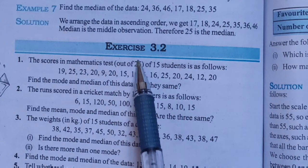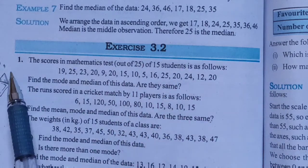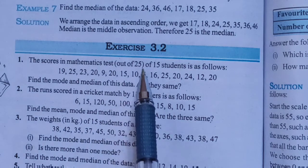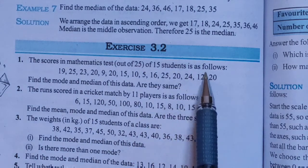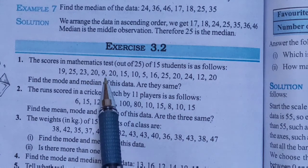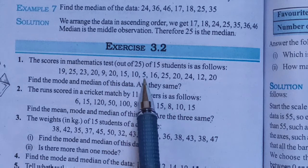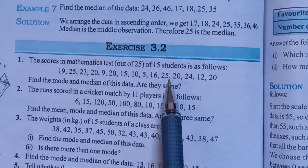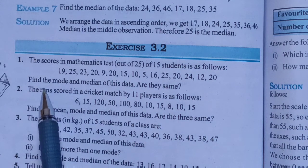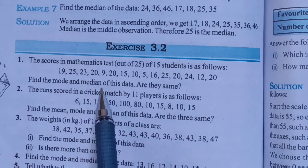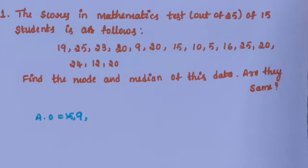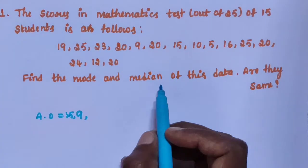Let us start exercise 3.2, question number 1. The scores in mathematics test out of 25 of 15 students are as follows: 19, 25, 23, 29, 20, 15, 10, 5, 16, 25, 20, 24, 12, 20. Find the mode and median of this data. Are they the same? First find the median.